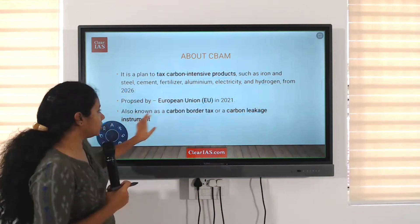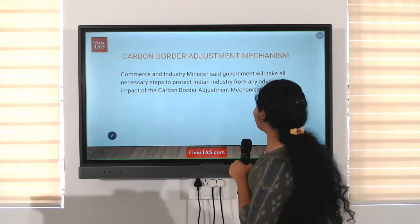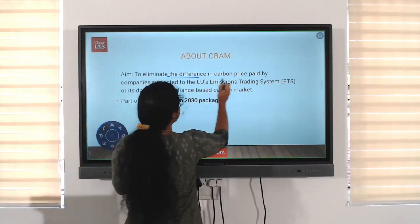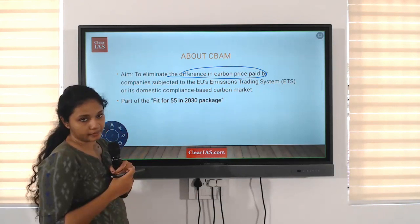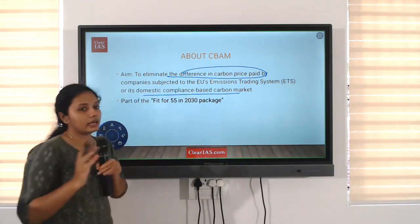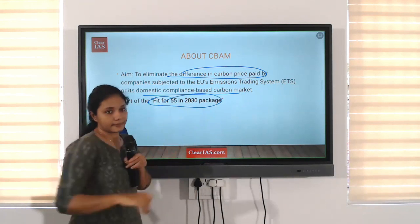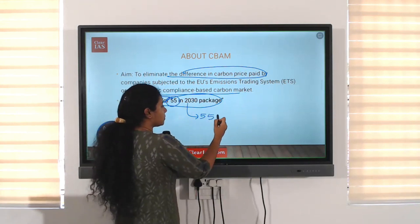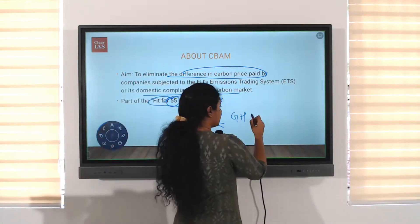This is by the EU — mainly taxing products which contain carbon. The aim is to eliminate the difference in carbon price paid by companies subjected to the EU's Emissions Trading System. The EU has a commitment under the Fit for 55 package — by 2030, it will reduce its greenhouse gas emissions by 55 percent.